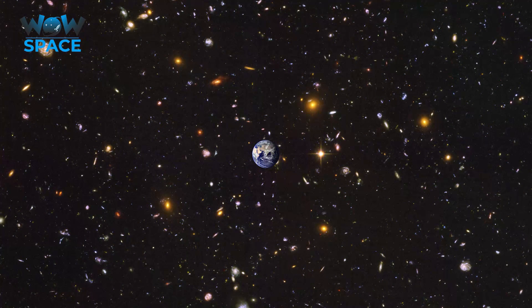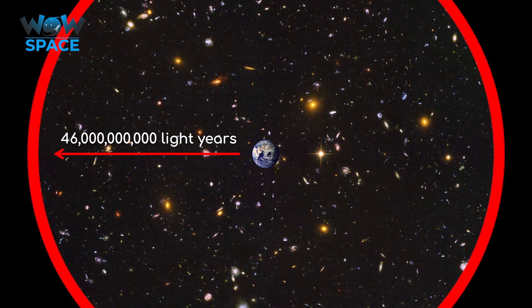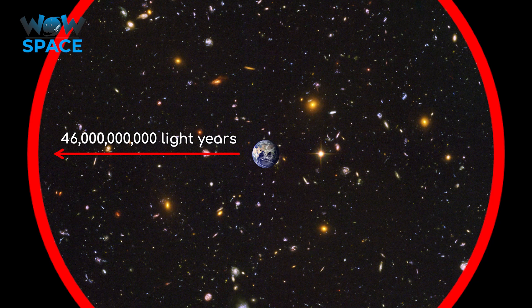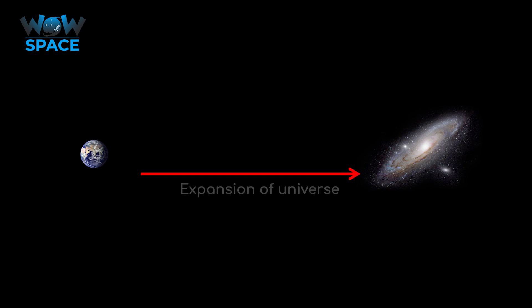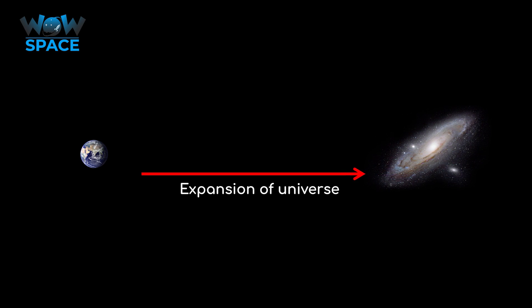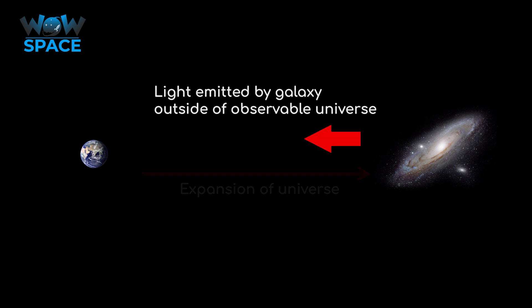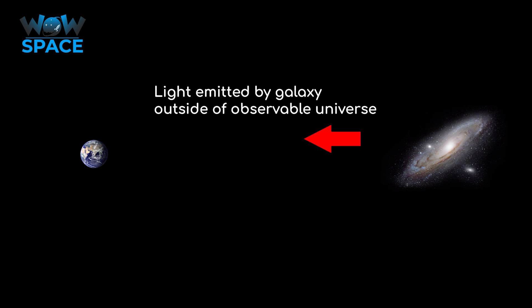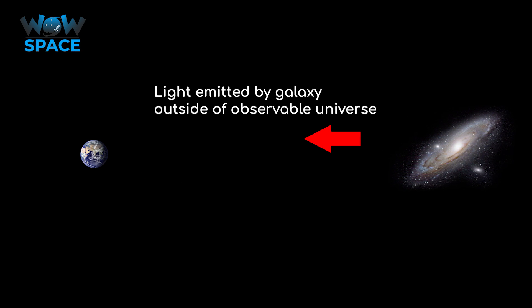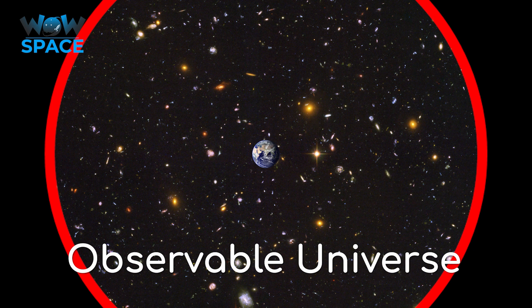it means that there is a sphere around us on Earth that we can't see beyond, because galaxies that are beyond that sphere are moving away from us faster than the speed of light. This means that even with a telescope capable of infinite magnification, there would be patches of space in our sky that contain nothing at all from our perspective.